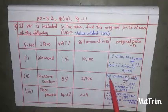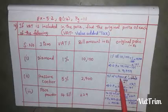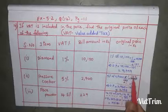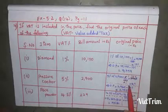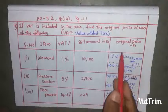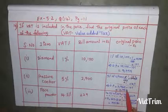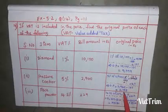5% of 2,940 equals 5 by 100 into 2,940. After cancellation, we get 147. So the original price of the pressure cooker is bill amount 2,940 minus 147, which equals 2,793 rupees.